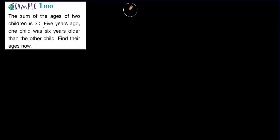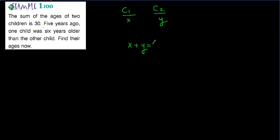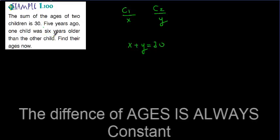The sum of ages of two children is 30. Five years ago, one child was six years older than the other child. Find the ages now. If we say x and y for the two children, the first equation is x plus y equals 30. For the second information, five years ago one child was six years older — but that doesn't change anything for us because the difference between the ages is always constant.